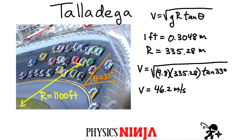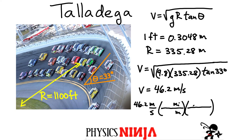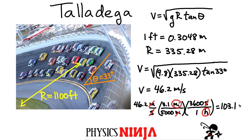46.2 meters per second doesn't give a great intuitive feel, so let's convert to miles per hour. Converting 46.2 m/s: multiply by 3600 seconds per hour, and use 5000 meters per 3.1 miles. The meters and seconds cancel out, and what I ended up getting was approximately 103.1 miles per hour. That's pretty fast — even without any friction between the tires and the road, you're still going to hit a hundred miles an hour.